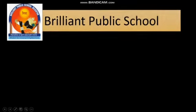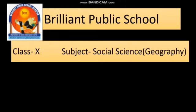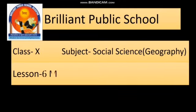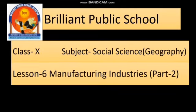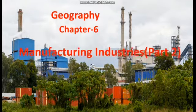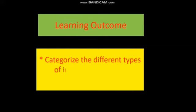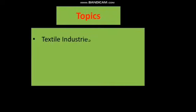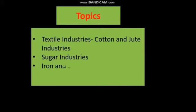Hello children, welcome to the online edu classes. Today we are going to discuss geography lesson 6, manufacturing industries part 2. After this video, the children will be able to categorize the different types of industries and their challenges. The topics we will cover are textile industries — including cotton and jute industries — sugar industries, and iron and steel industries.